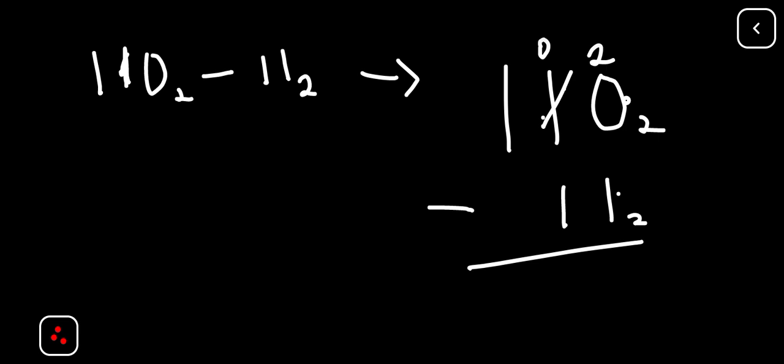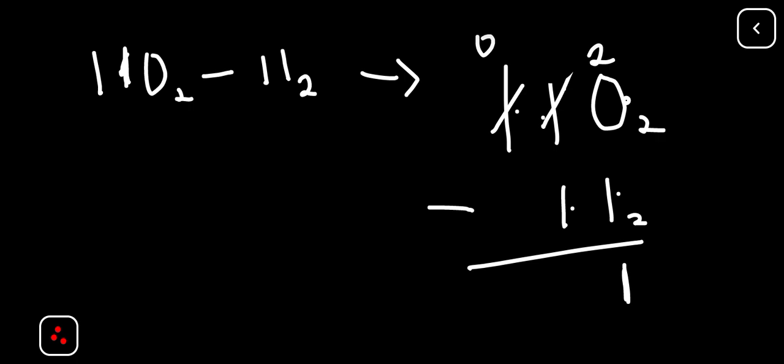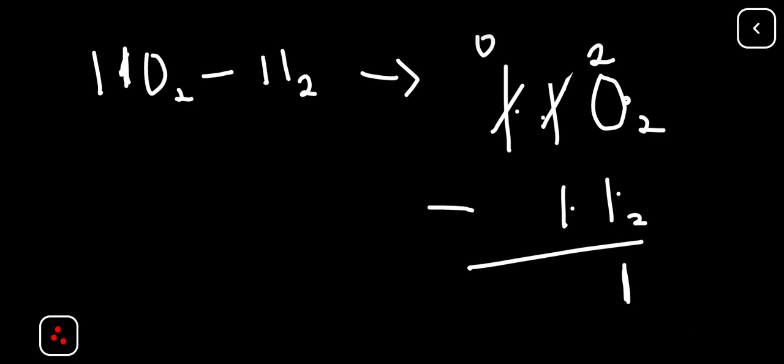He has given this guy 2. Now 2 minus 1 is 1. Now we have 0 up here. 0 cannot subtract 1, so he has to also borrow. Borrowing from 1 here, this one becomes 0, and then this one now becomes 2. So 2 minus 1 is 1.